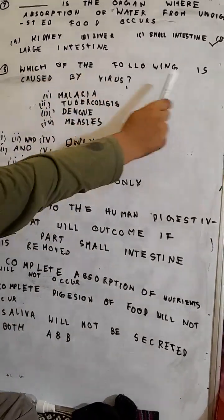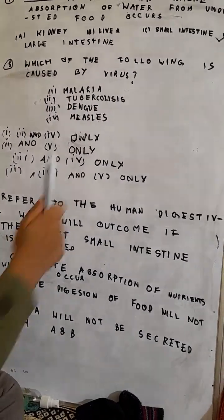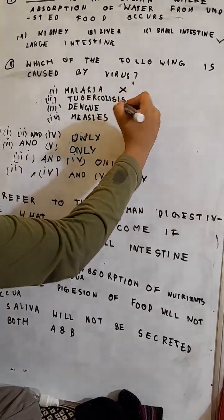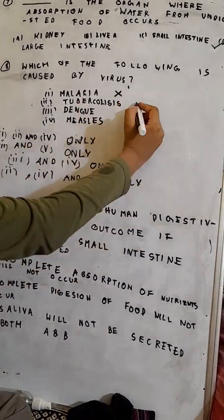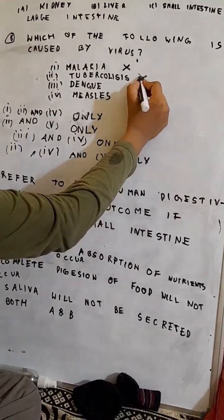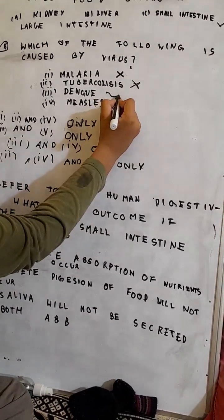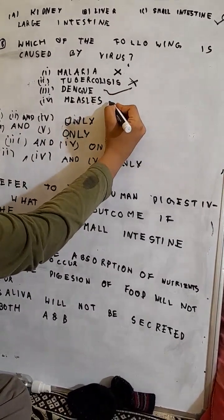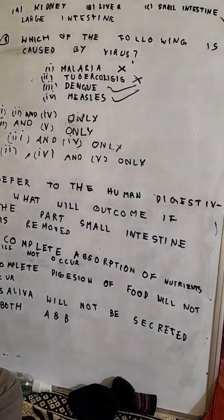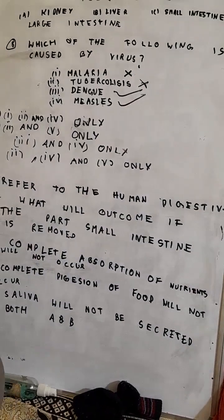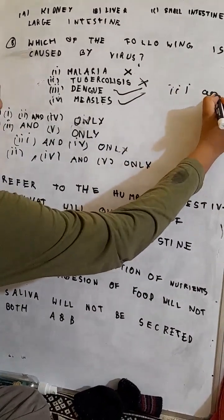Which of the following is caused by a virus? Malaria is not caused by a virus. Tuberculosis is not caused by a virus. Dengue is caused by a virus. Measles is also caused by a virus. So the correct option is option 3, III and IV only.